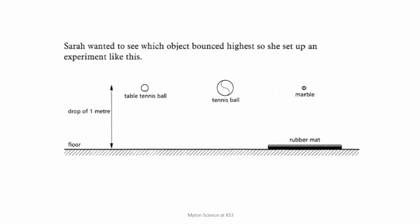Finally, Sarah wanted to see which object bounced highest, so she set an experiment up dropping balls from a height of one metre onto the floor. What's unfair about this practical? If you said it was because there was a rubber mat under the marble, then that's obviously what's unfair about this one. Doing something like that would change the results and not give her reliable, accurate results.